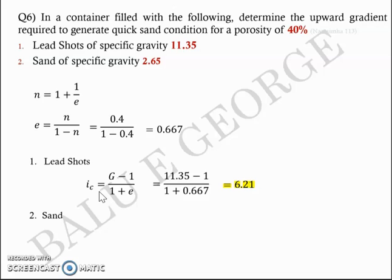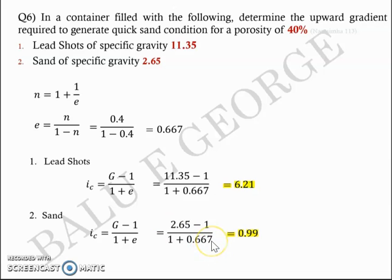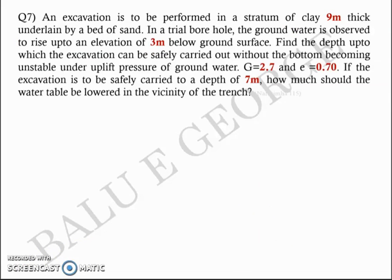Case 2: Sand with G = 2.65, same void ratio e = 0.667. Critical hydraulic gradient i_c = (2.65 − 1) / 1.667 ≈ 0.99, approximately equal to 1. So for soil with G = 2.65 and e = 0.667 — pure sand with upward seepage — quicksand condition is expected when h/l ≈ 0.99.